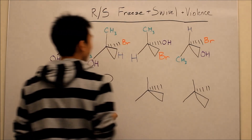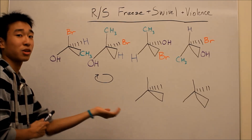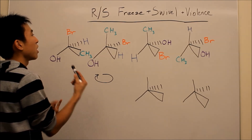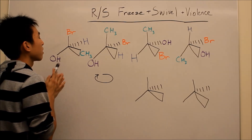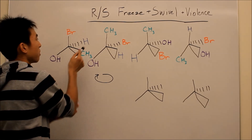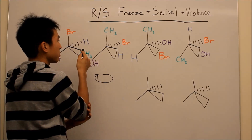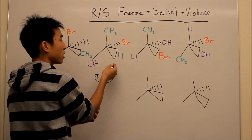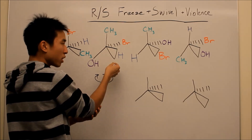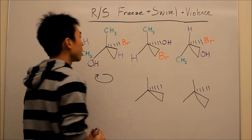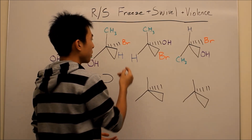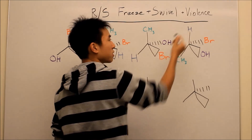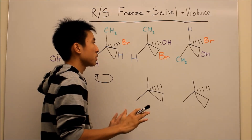On the board I have the four different situations that you can possibly have. You can have your lowest priority group in the back — that's usually our most favorite, and that's what you guys all know how to do. Your lowest priority group in the front is a little bit harder. And then lowest priority group on the side or on top — this one you might have a little trouble doing.